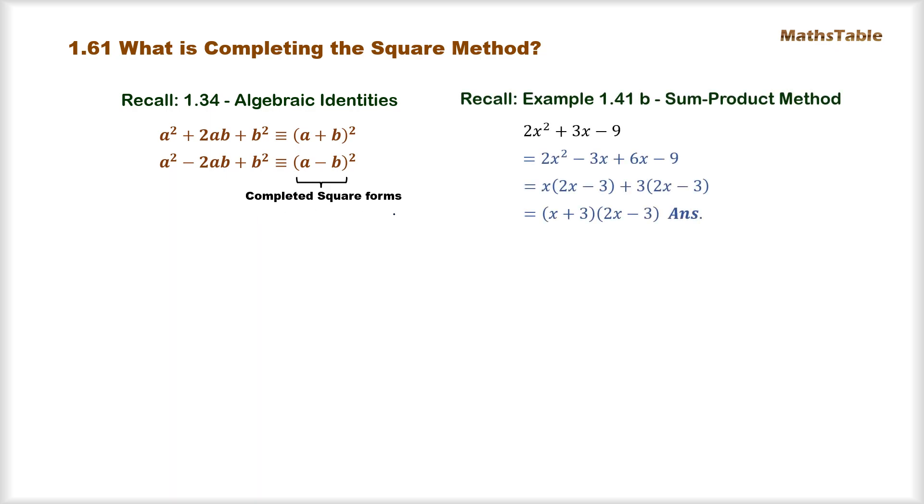Let's check another example which we discussed in section 1.4 of the sum product method. What we discussed there was how to factorize a quadratic expression by splitting the middle term into two parts, and by factorizing further, we used to get the final factorized form of such an expression. Now this method was one of the most common methods of solving quadratic equations.